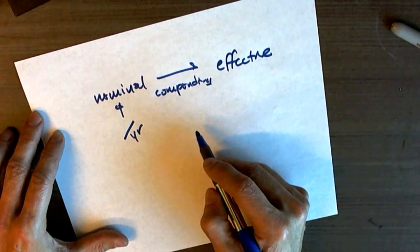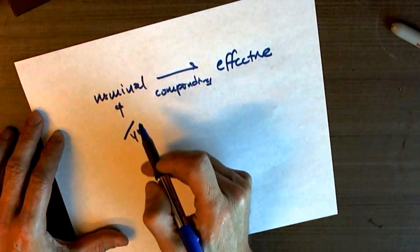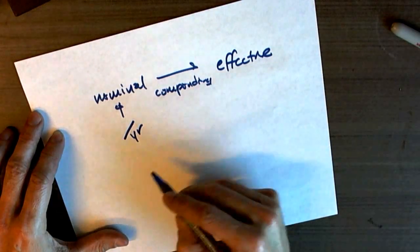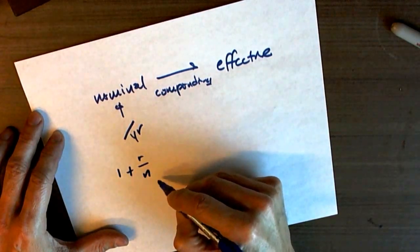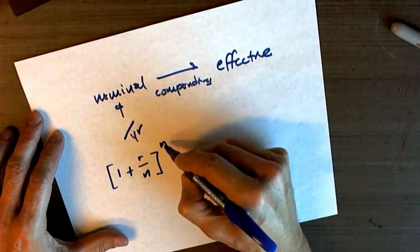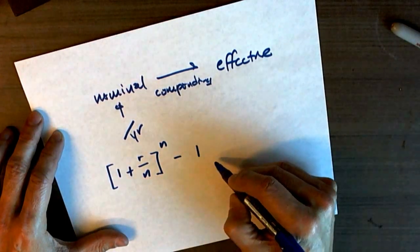the effective rate is going to be higher than the nominal. So how do we translate a nominal or a stated interest rate into an effective interest rate? 1 plus r over the number of compounding periods a year raised to the number of compounding periods per year minus 1.